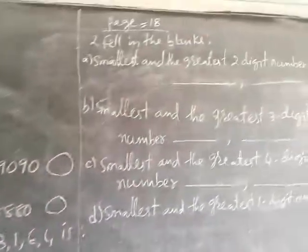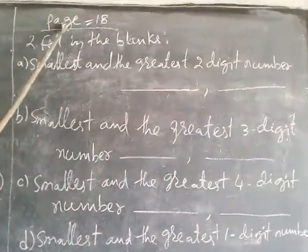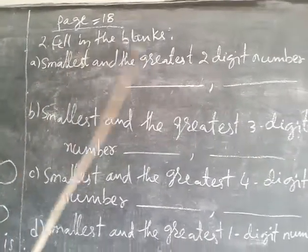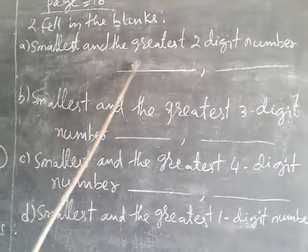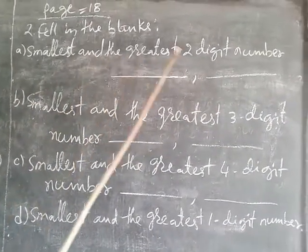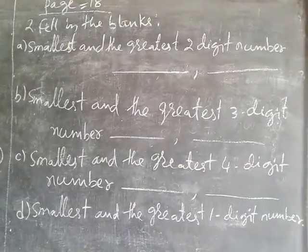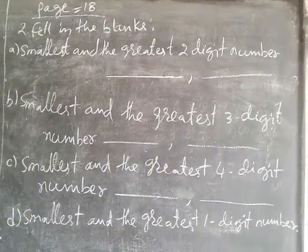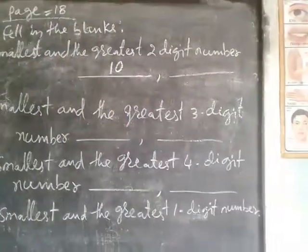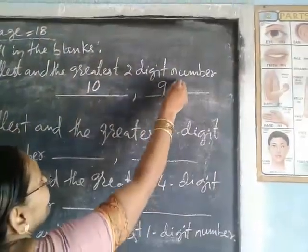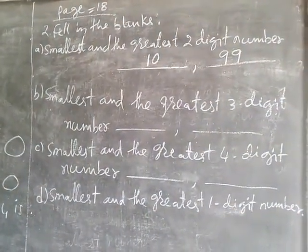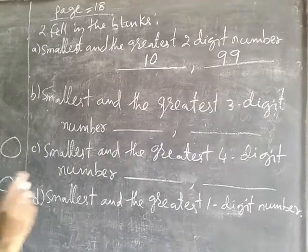Now where the number on page eighteen opens, there is question number two — fill in the blanks. Question A: smallest and greatest two-digit number. Which one is the smallest two-digit number? That is ten. And which one is the greatest two-digit number? That is ninety-nine. So the smallest two-digit number is ten and the greatest two-digit number is ninety-nine.